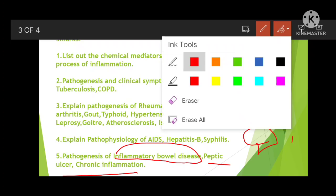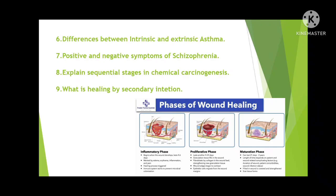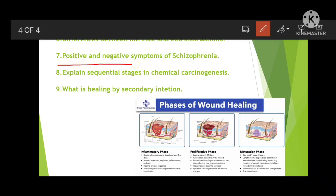Next: the difference between intrinsic and extrinsic asthma — asthma has two classifications and you have to write them both. Then positive and negative symptoms of schizophrenia — this question has been repeated many times in previous examinations. Positive and negative symptoms are the symptomatic types of schizophrenia. Schizophrenia is also a central nervous system disorder.